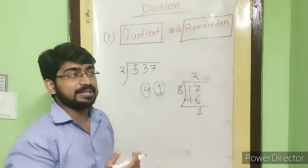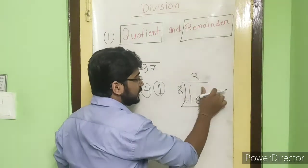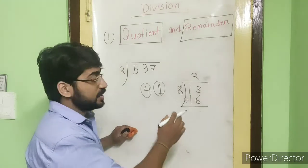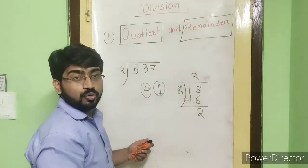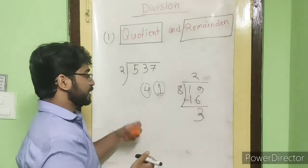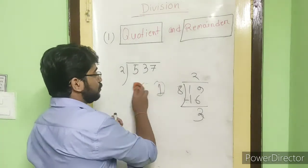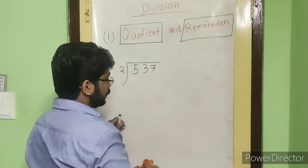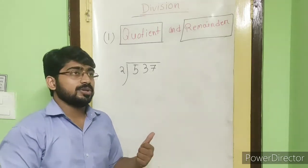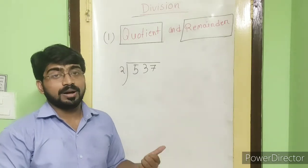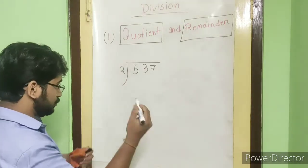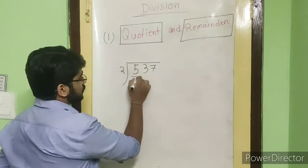Remainder means what is left over. In place of 17 if I write 18, the quotient will be the same but the remainder will change: 8 into 2 is 16, 18 minus 16 equals 2. If I write 19, the remainder becomes 3. So the number which remains and cannot be divided further by the divisor is called the remainder.